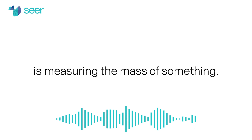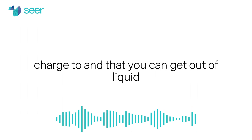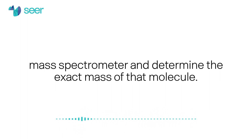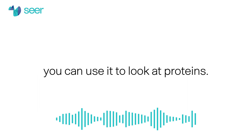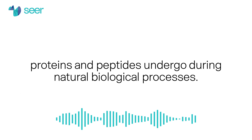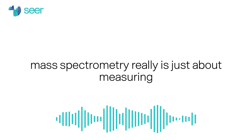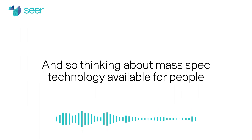What is mass spectrometry at a basic level? Mass spectrometry is measuring the mass of something. If you have a molecule that you can apply a charge to and get out of liquid and into gas, you can put it into a mass spectrometer and determine the exact mass of that molecule. In terms of how that applies to proteomics, you can use it to look at proteins and changes that proteins and peptides undergo during natural biological processes. At its core, mass spectrometry is really just about measuring the mass of an individual particle.